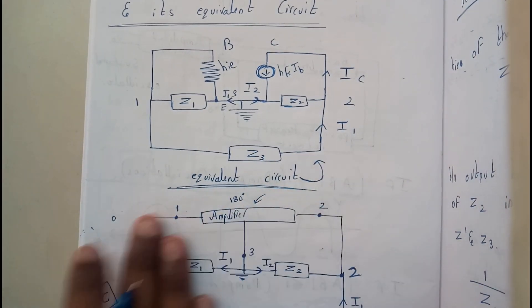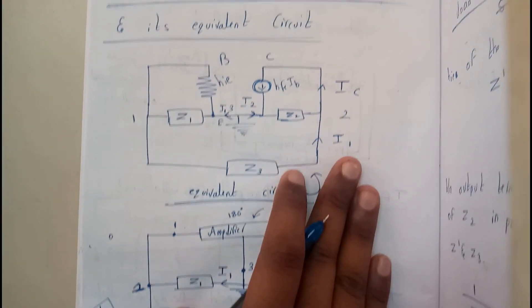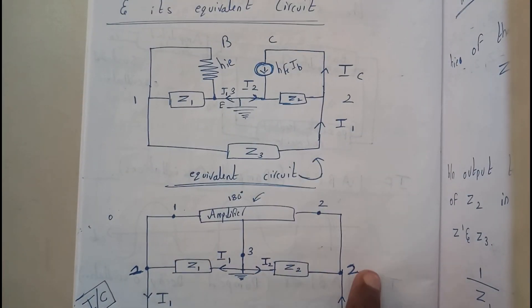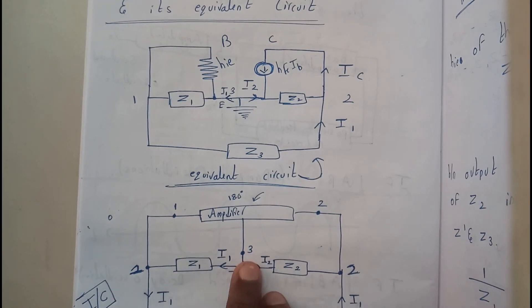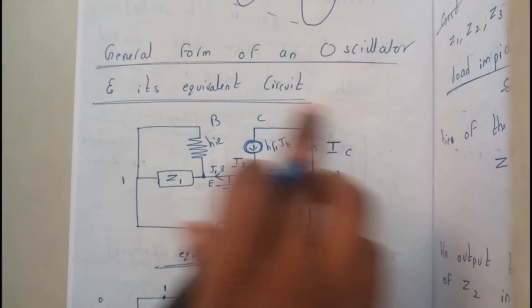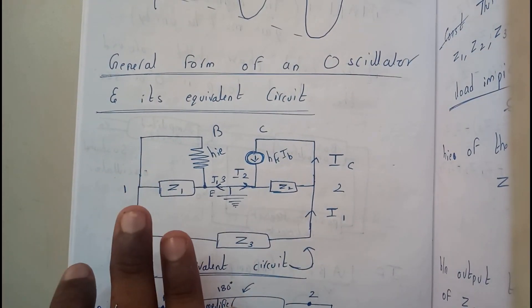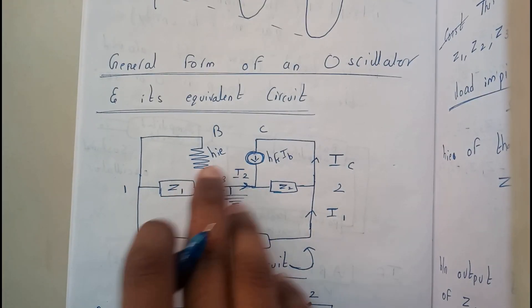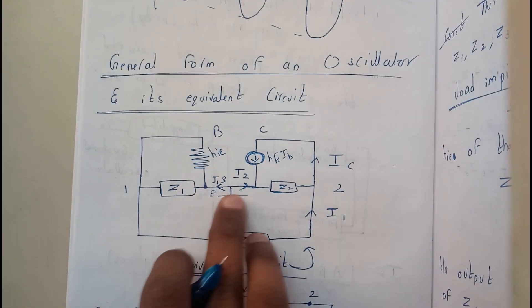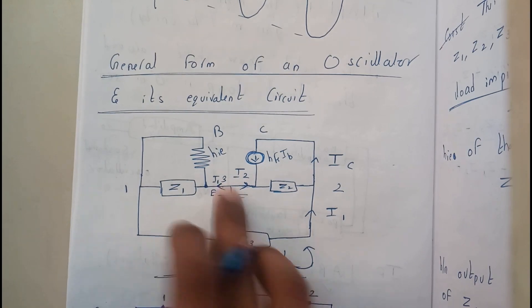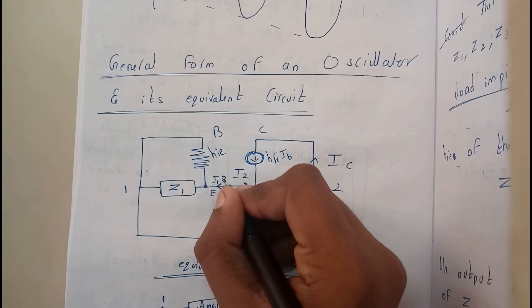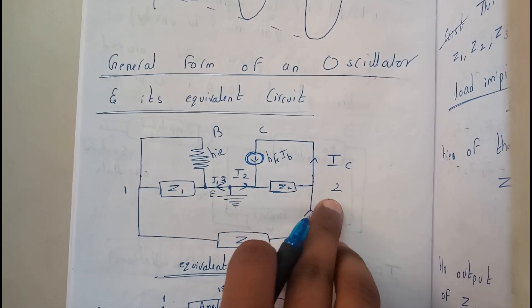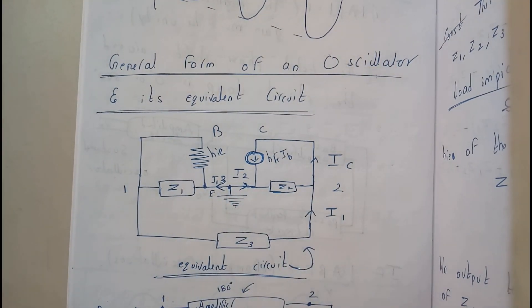If we want to draw an equivalent diagram, it will be like this. Remember the points are one, two, and three. From the equivalent diagram, Z1 and HIE will be at one point, and the third point is identified as well. The current I1 and I2 are moving towards point one, so I1 is moving towards I2.